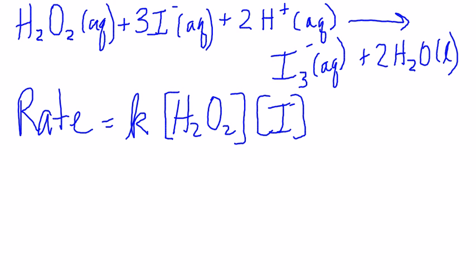If we are given this information, notice that the exponents on the hydrogen peroxide and on the iodide, the I-, are both ones. If nothing is written there, they are both ones.